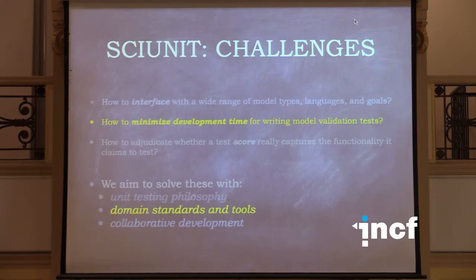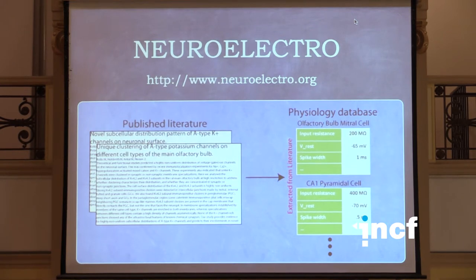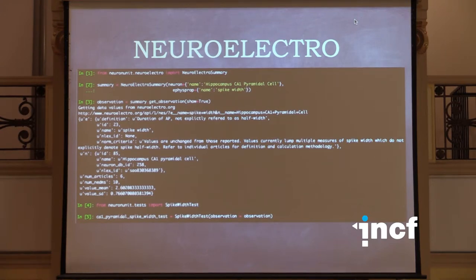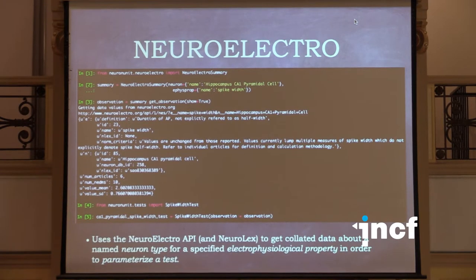How do we solve development time and make this fast? There are emerging standard data sources that people can use to parameterize tests, instead of looking at a paper and writing down values or scraping CSV files. NeuroElectro is one of those — you just saw Shreejoy present it. Generating a test based on data from NeuroElectro is really easy: you basically provide the name of the neuron and the name of the property, and you can create a test parameterized by that observation to contest models against it.